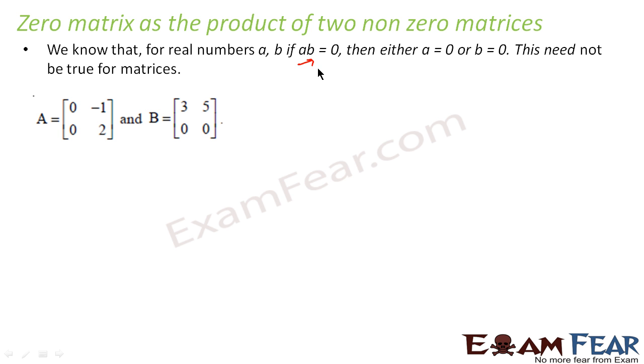If you have AB equal to zero, then either A has to be equal to zero or B has to be equal to zero or both are equal to zero in the case of real numbers. But in case of matrices, A times B equal to zero does not mean that A and B matrices are zero. It may be possible that both A and B matrices are non-zero, but still you get the product as zero.